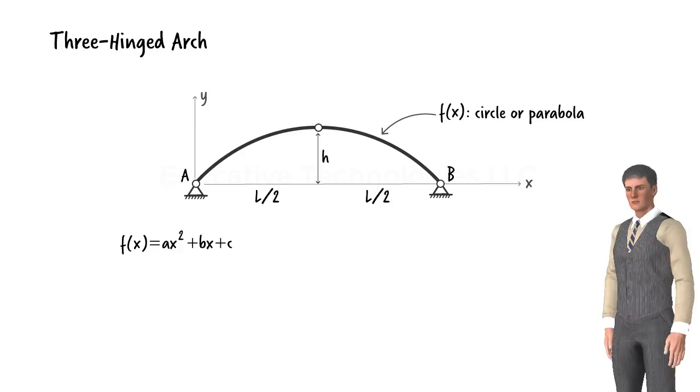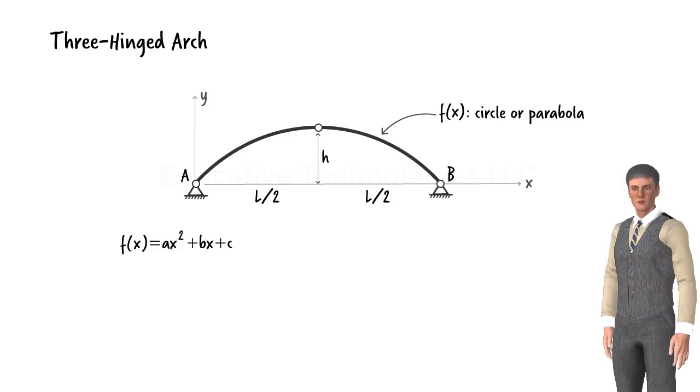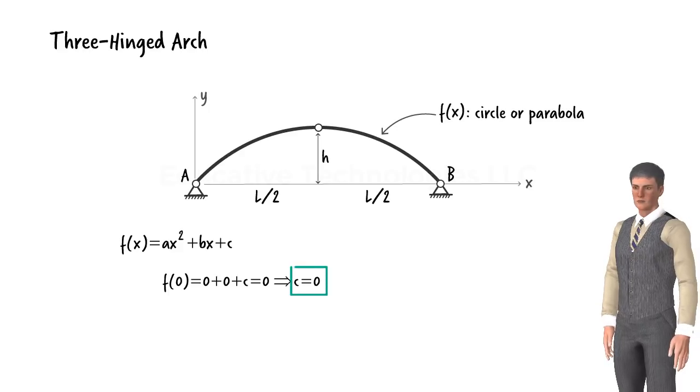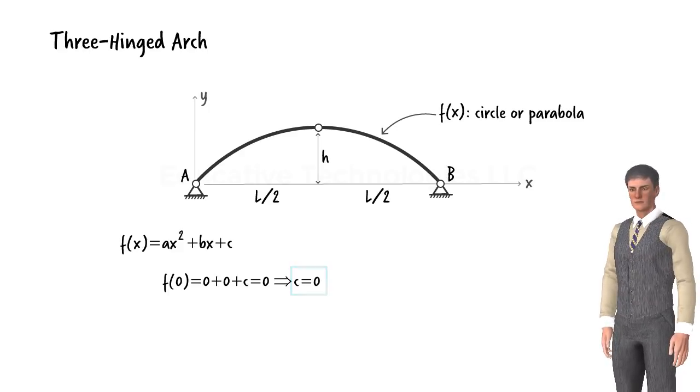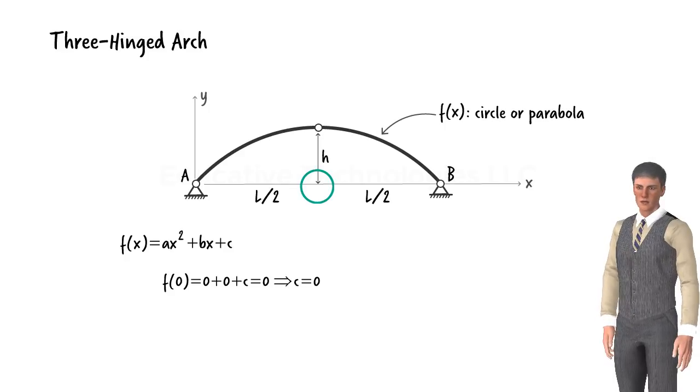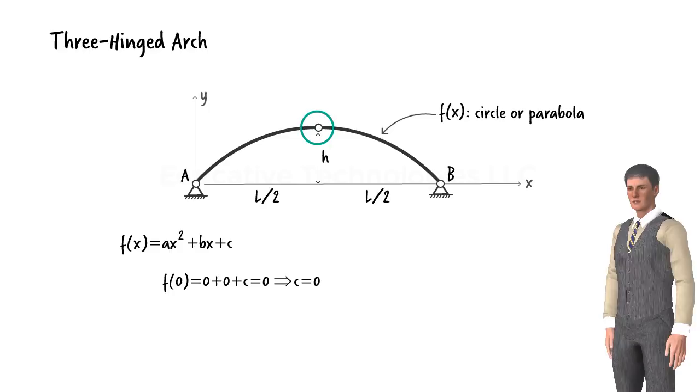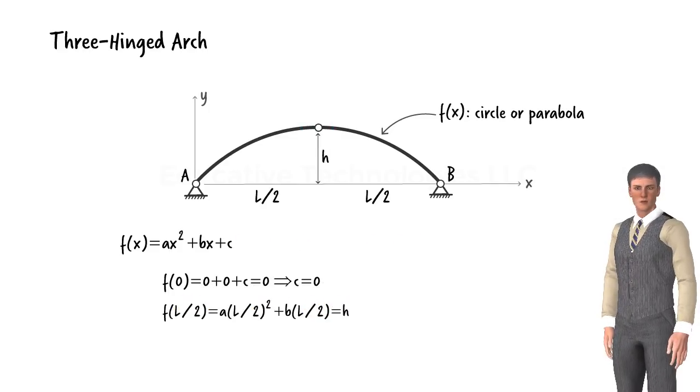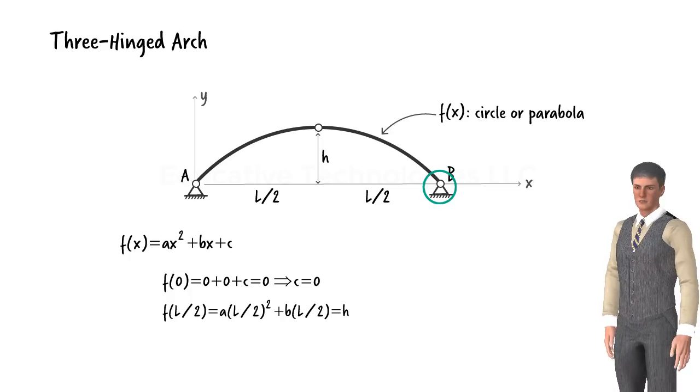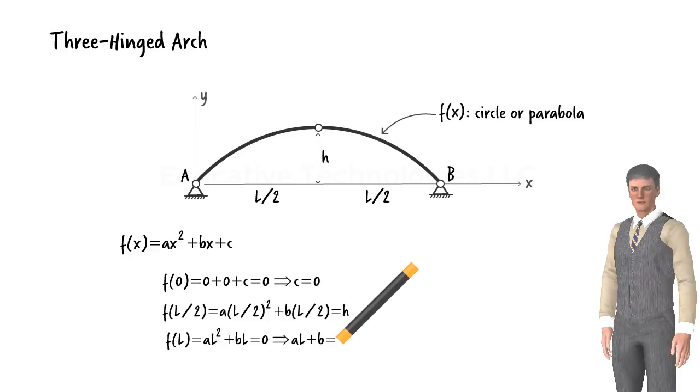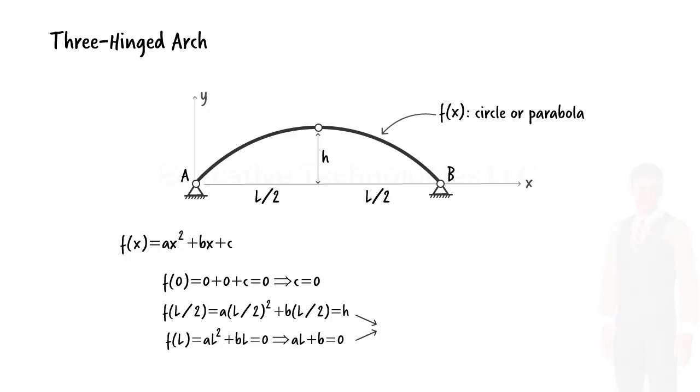We know that the arch has a height of 0 at the left support, so we can write. This gives us c equals 0. We also know that when x is l over 2, the height of the arch is h, so we can write. Further, at the right end of the arch where x equals l, our function should evaluate to 0. Using these two equations, we can solve for coefficients a and b.